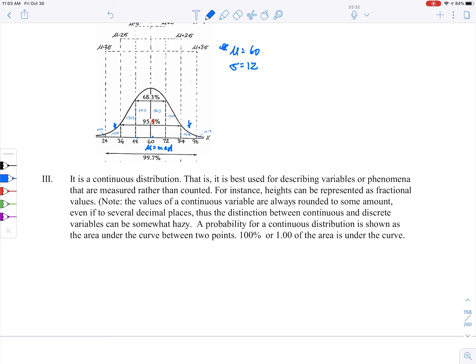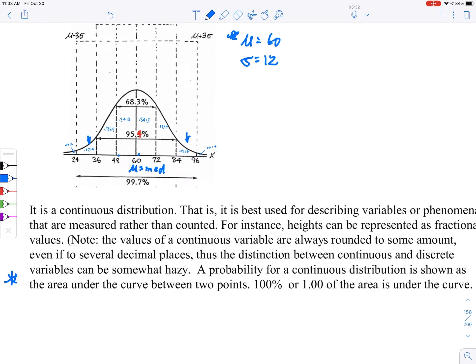A probability for a continuous distribution is shown as the area under the curve between two points. 100% or 1.00 of the area is under the curve. That's going to be an important thing as we go forward here.